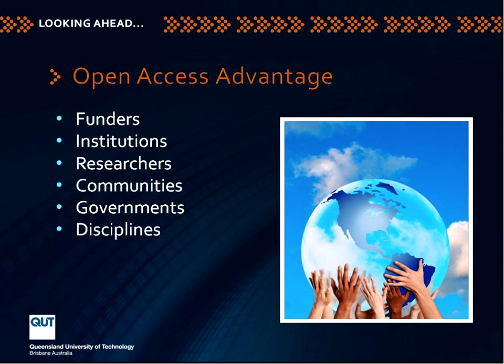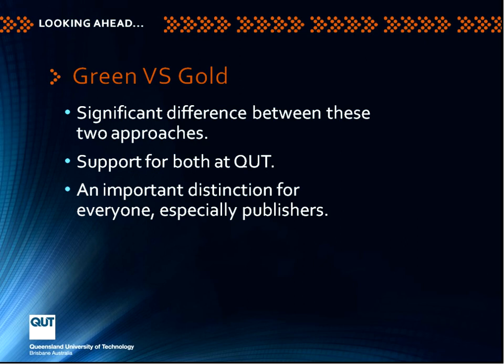For institutions, there's the kind of advantage that QUT sees in having greater visibility. For researchers, the effects can be rewarding. Communities can feel more connected with the scientific literature by having it more broadly available. As a matter of government policy, that is what taxpayers' money should be spent on optimally. And within disciplines there's also an advantage that can be argued. From those six perspectives, there's definitely advantage, which is why we see such a swing towards it globally.